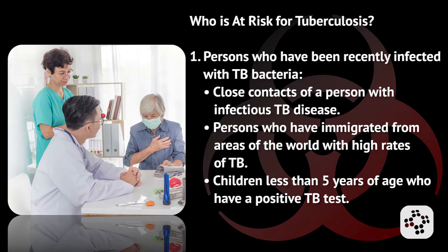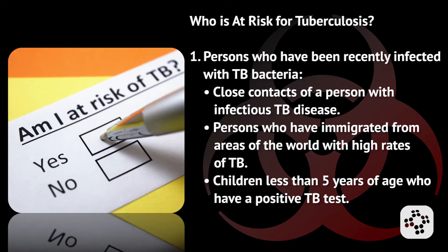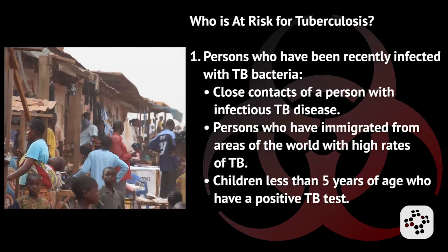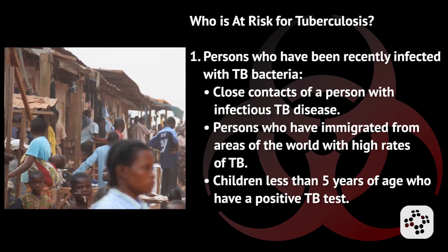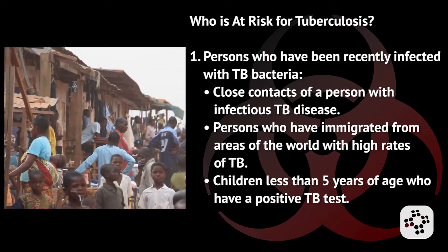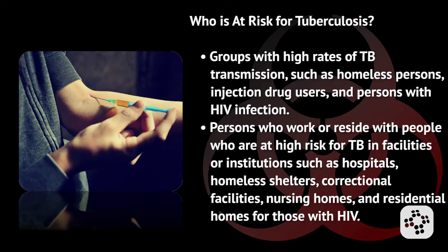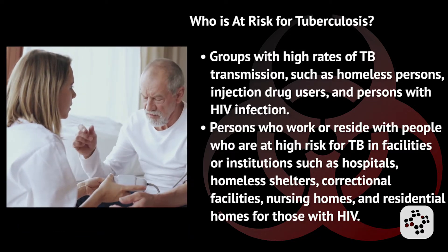They are prescribed drugs that can treat tuberculosis disease. So who's at risk for tuberculosis? The categories of persons at high risk for developing TB include: persons who have been recently infected with tuberculosis bacteria, including close contacts of a person with infectious TB; persons who have immigrated from areas of the world with high rates of TB; children less than five years of age who have a positive TB test; and groups with high rates of TB transmission such as homeless persons, injection drug users, and persons with HIV infection.